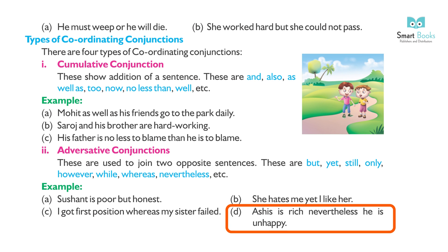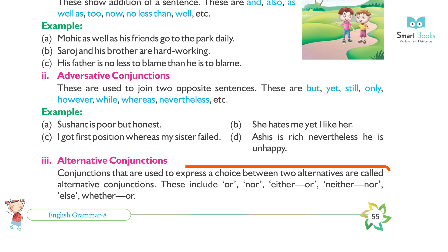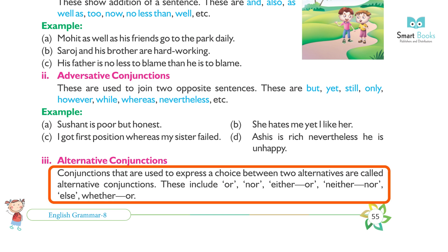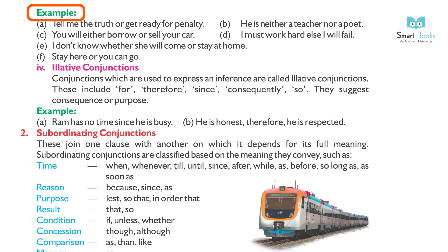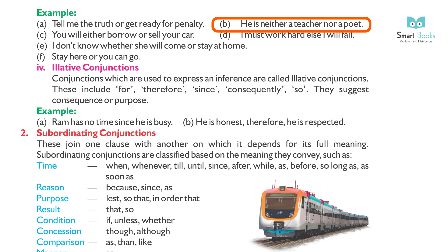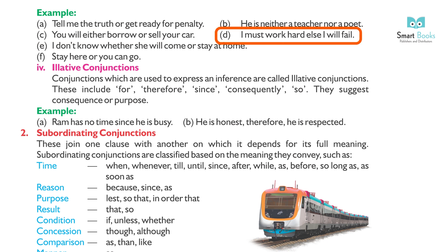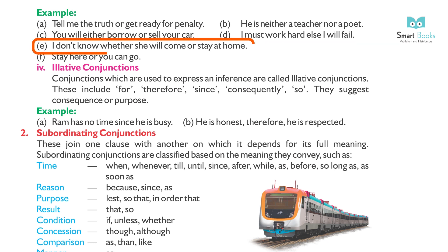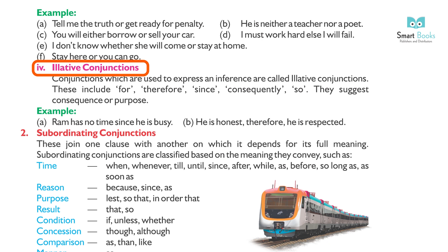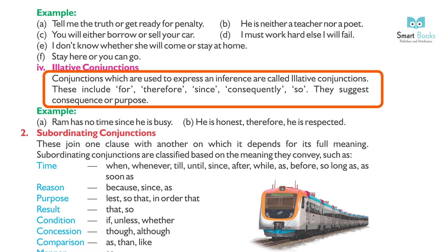3. Alternative conjunctions — conjunctions that are used to express a choice between two alternatives are called alternative conjunctions. These include: or, nor, either...or, neither...nor, else, whether...or. Example: (a) Tell me the truth or get ready for penalty. (b) He is neither a teacher nor a poet. (c) You will either borrow or sell your car. (d) I must work hard else I will fail. (e) I don't know whether she will come or stay at home.